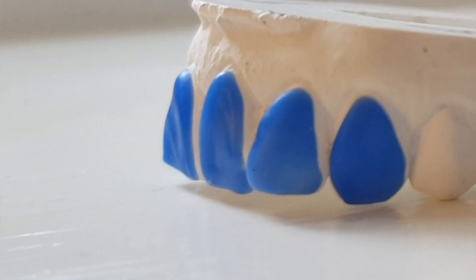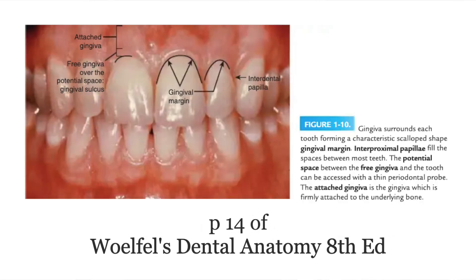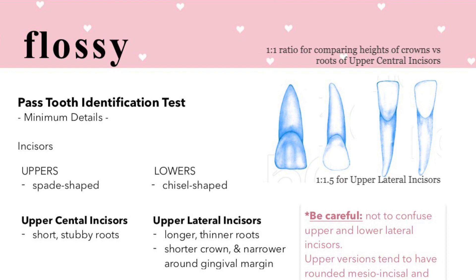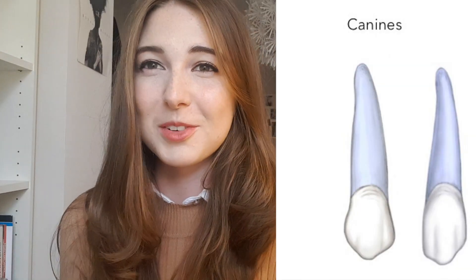It's a little bit more harsh and defined on the upper centrals, and then on the laterals they're slightly more rounded. Upper laterals are also shorter in crown height than upper centrals, narrower around the gingival margin, and they have longer, thinner roots — that's a really obvious one — whereas upper central incisors have short stubby roots. You can see that clearly on the diagrams in the revision pack. It's not necessary to learn the difference between left and right for the mandibular incisors, and we're not being tested on the difference between lower central and lower lateral incisors.